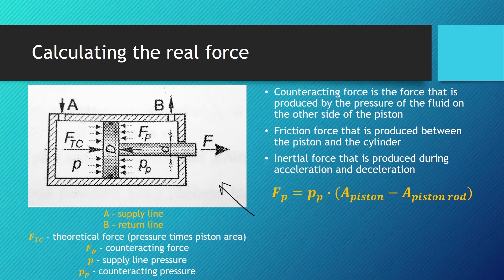Here we have the counteracting force Fp — the force that comes from the counter pressure on the other side, which is the fluid that has been left inside the hydraulic cylinder. So we have the counteracting pressure Pp, and we have the theoretical pressure of the cylinder, which we calculate using the pressure and the area of the piston.